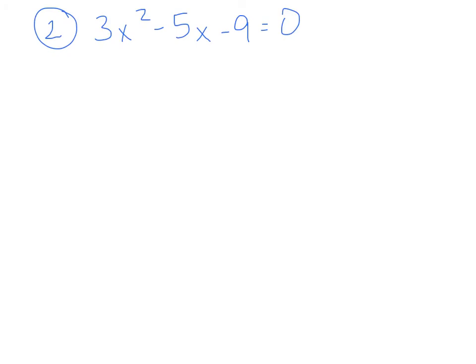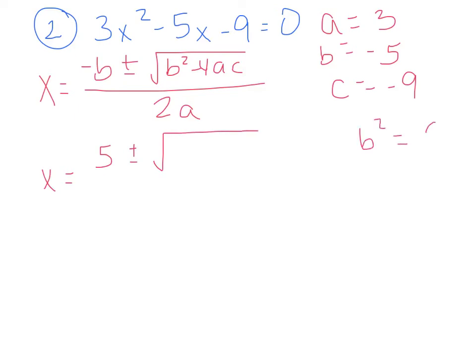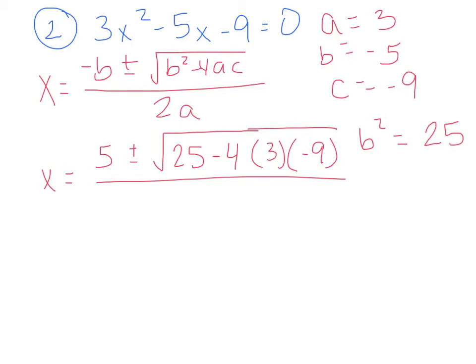I'll help you with the calculator part tomorrow. Just make sure you get down the formula and how to plug the numbers in. Let's try another one: 3x squared minus 5x minus 9. If I tell you right away you're going to have to use the quadratic formula, just do it instead of trying to factor — it'll save you some time. So a equals 3, b equals negative 5, c equals negative 9. Those are the coefficients. So you have x equals opposite b plus or minus the square root of b squared minus 4ac all over 2a.